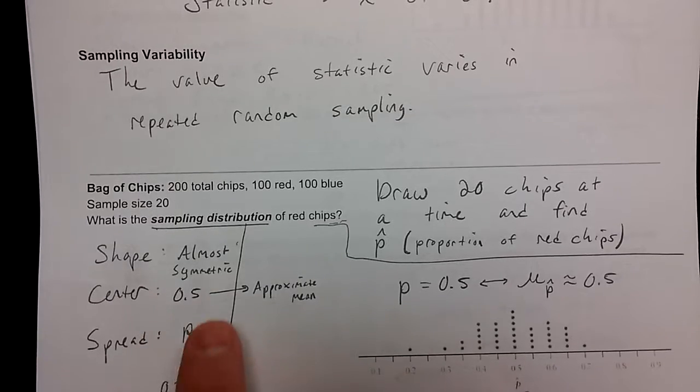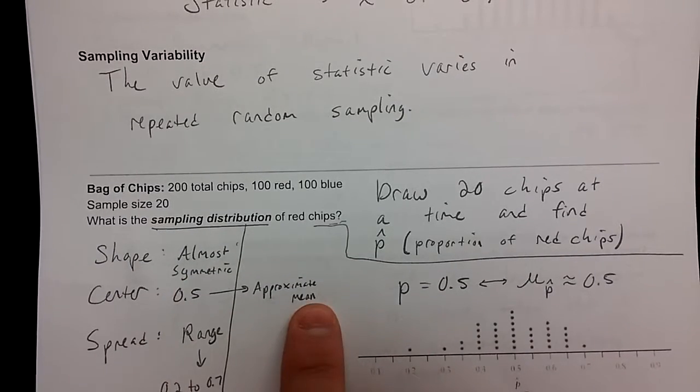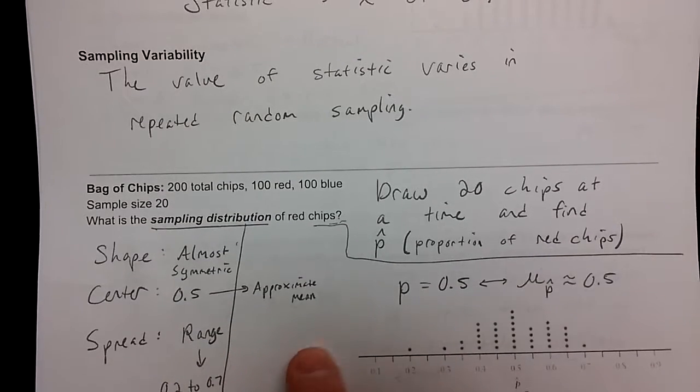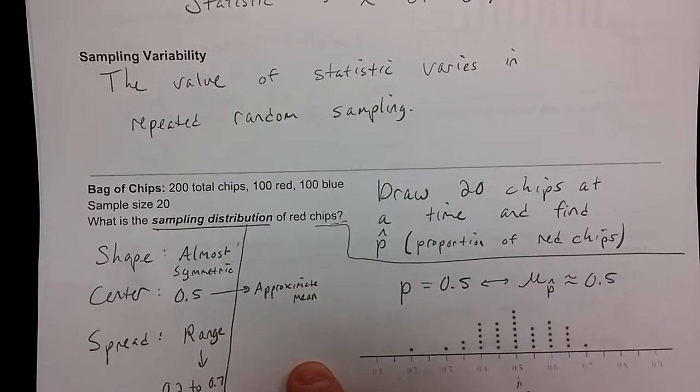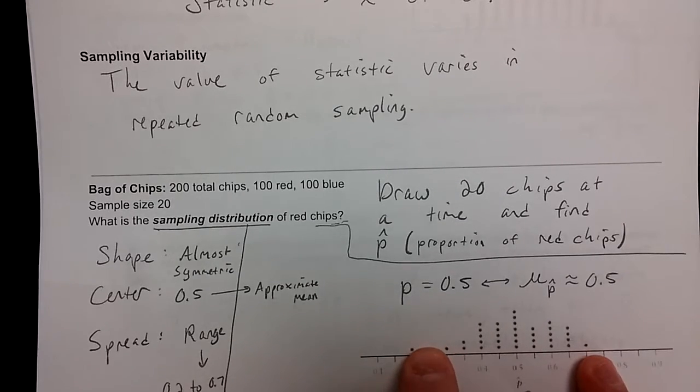Shape, center, spread. It's almost symmetric. The center is at 0.5, the approximate mean. And this makes sense because just p by itself is 0.5. And the range is 0.2 to 0.7. So we have none that are all black chips, or none that are all red chips, somewhere in between 0.2 and 0.7.